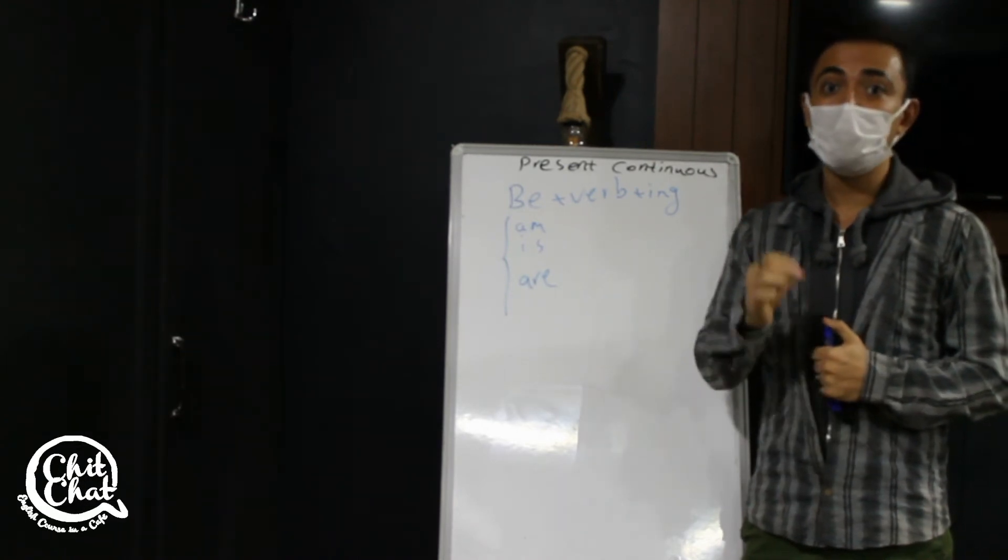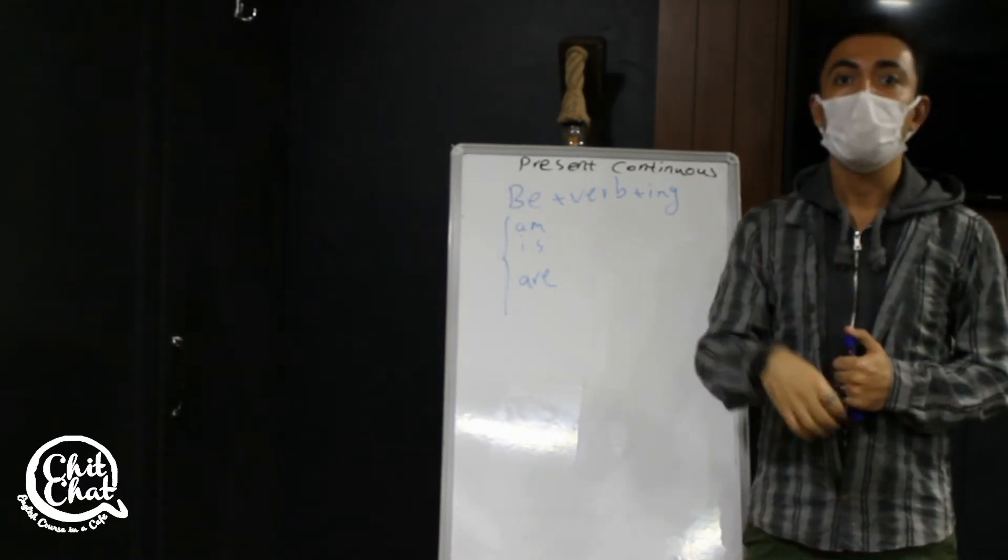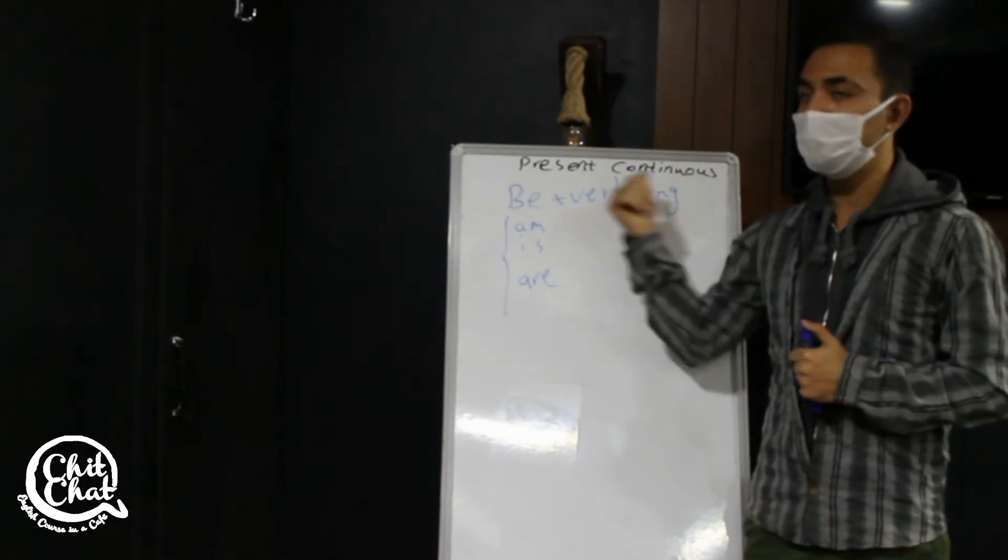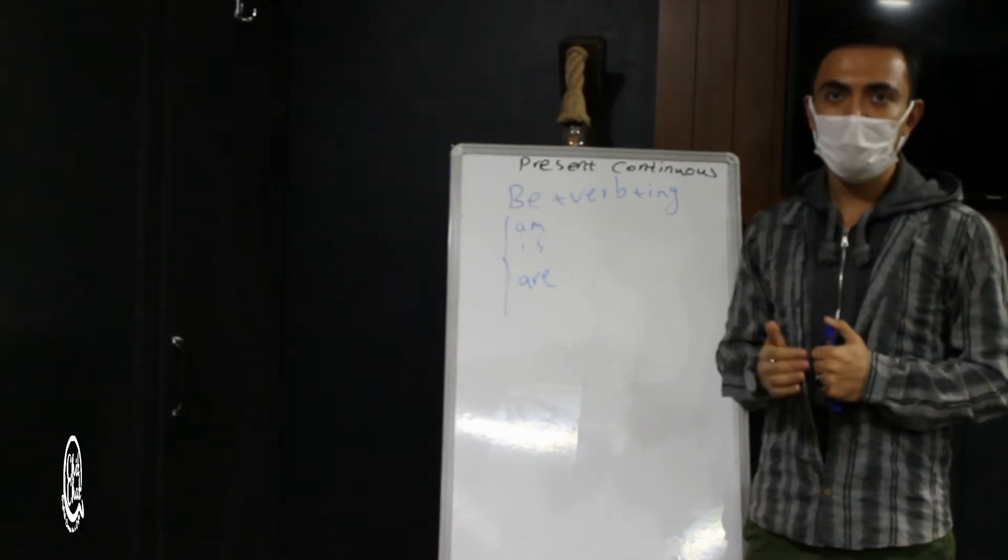And number three, whenever you want to talk about the arranged future or planned future, you should use present continuous tense. What do I mean by this?